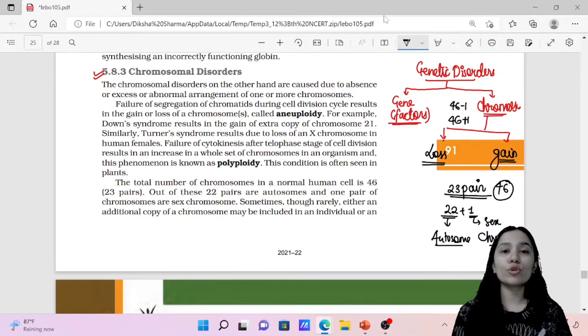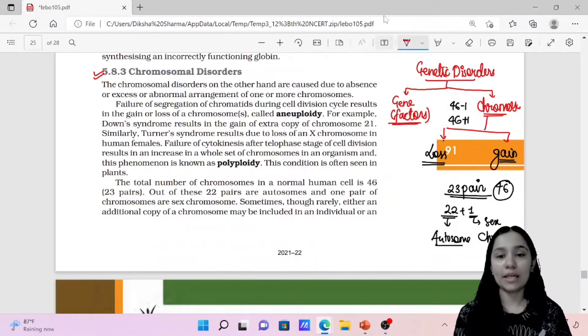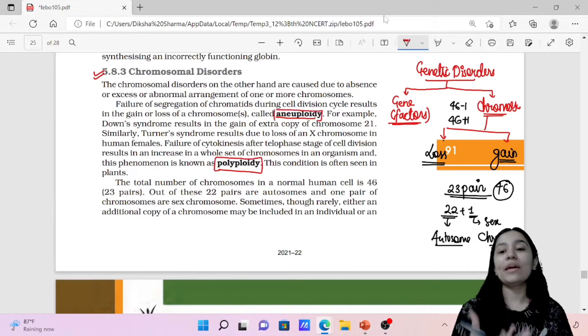This chromosomal disorder is gain or loss. If chromosomes are gaining, then we call it polyploidy. If you have loss, we call it aneuploidy. Clear? If your 46 chromosomes is minus, then it will be aneuploidy. And if you add extra additional chromosome in 46 chromosomes, then we call it polyploidy.